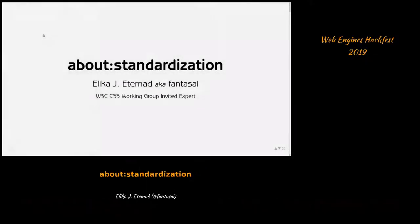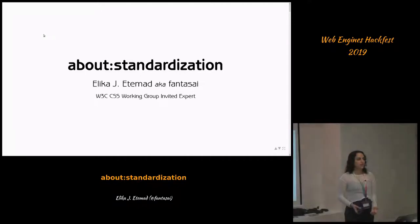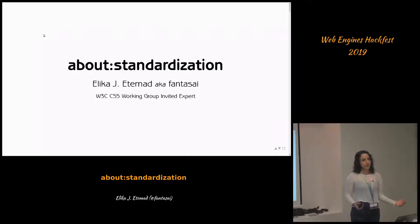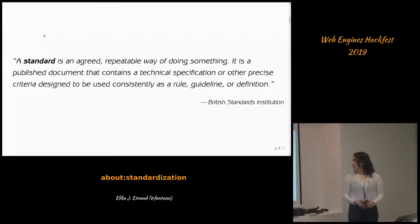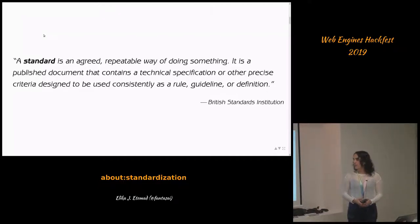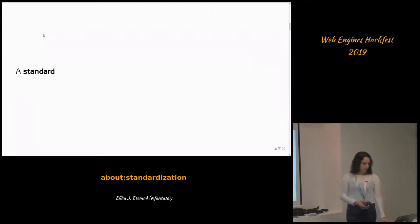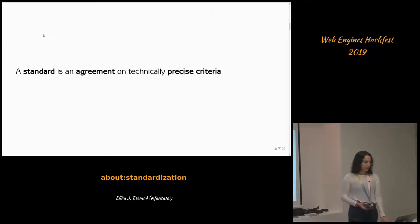Rego asked me to do a talk about standardization because I have worked on standards for about a decade and a half. A standard, according to one definition, is an agreed, repeatable way of doing something — a published document containing a technical specification or other precise criteria designed to be used consistently as a rule, guideline, or definition. In other words, a standard is an agreement on technically precise criteria to consistently repeat something.